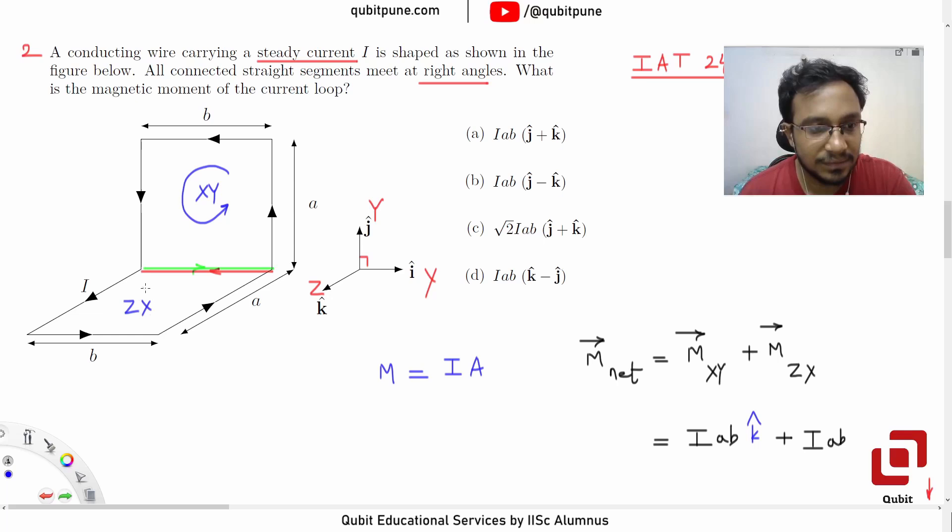The current is flowing like this. So we need to arrange the fingers of our right hand in that direction. So when it comes to the red conductor, the direction of the finger should be from its right hand to its left hand.